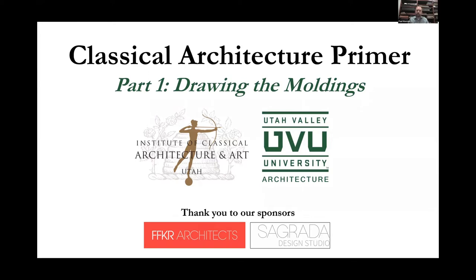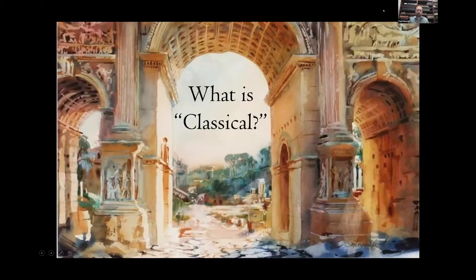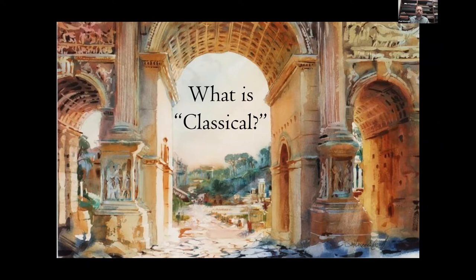Tonight's class will be about an hour, maybe an hour and a half. I have about a 20-minute slide presentation that will set the table and introduce some concepts. Then we'll have our main course, which is to draw the moldings. We want to start with a difficult question: how to define the word classical? This is, after all, the classical architecture primer — but what does that word mean?